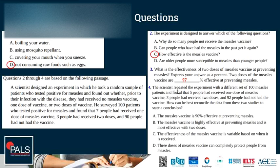The scientist repeated the experiment with a different set of 100 measles patients and found that 5 people had received one dose, 3 had received two doses, and 92 had not had the vaccine. How can he best reconcile the data from the two studies? The correct answer is B: the measles vaccine is highly effective at preventing measles and is most effective with two doses.